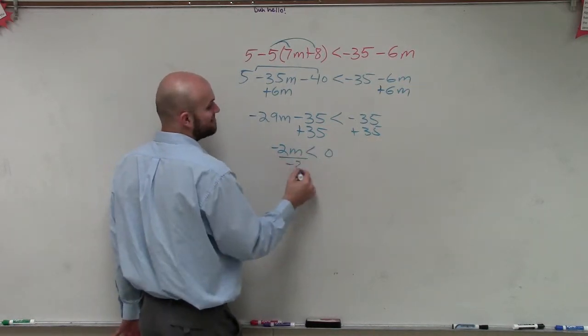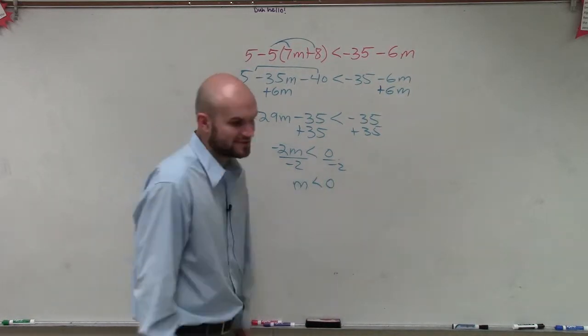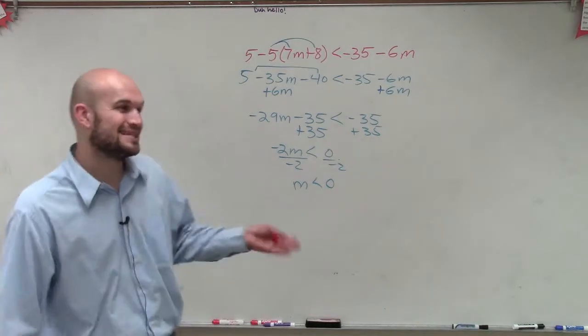Now, since I'm dividing by a negative number, I now have to flip my sign. So the inequality I have to solve for is m is less than 0.